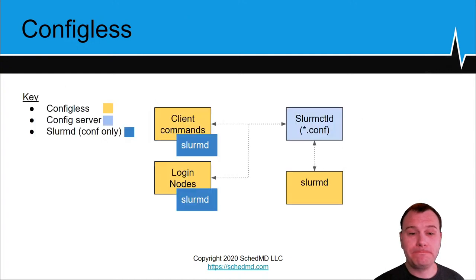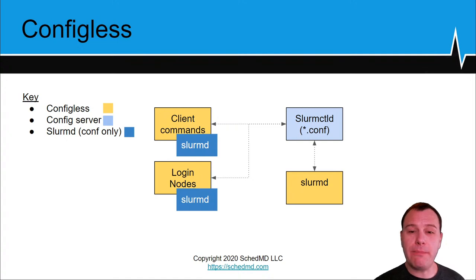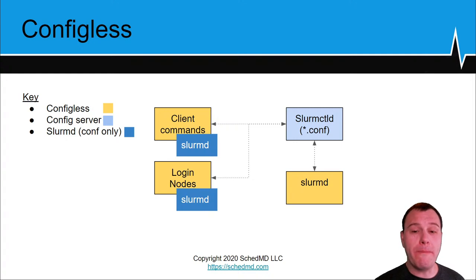We generally suggest running a slurmd to manage configs on the login or submit hosts that run client commands, but not let jobs get scheduled on those front-end nodes. In this way, client commands pull from the local cache storing the configuration files. This extended configless setup adds slurmd processes to the two client nodes — these slurmds can be put in a non-accessible partition, hidden from users — allowing client commands to access configs from the shared conf cache directory, avoiding requests to the server. The cluster will perform much better and there will be fewer RPCs.